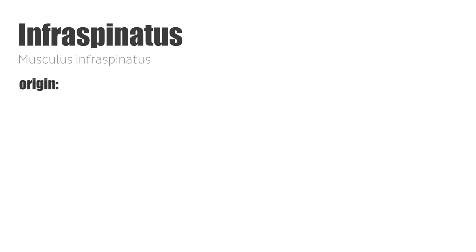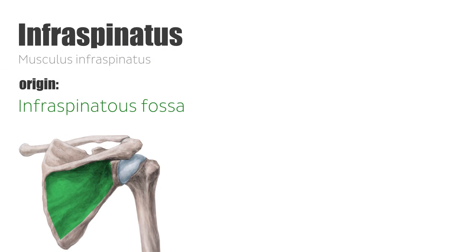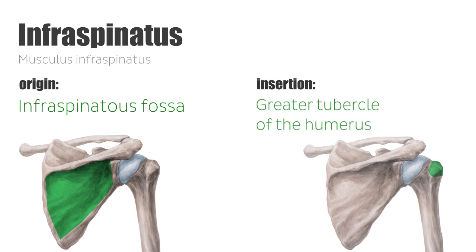As mentioned, in this tutorial we will focus on the infraspinatus muscle. This muscle originates in the infraspinatus fossa of the shoulder blade, or scapula, and inserts on the greater tubercle of the humerus.